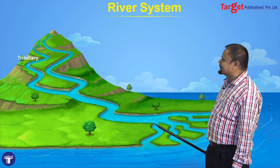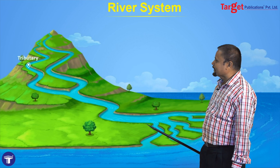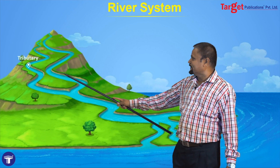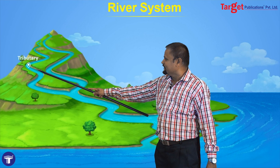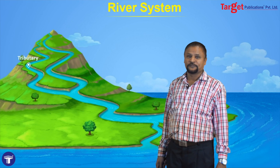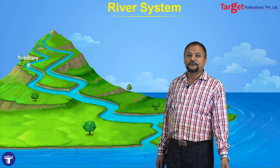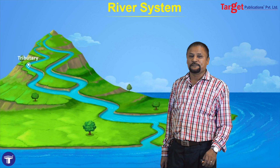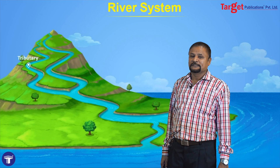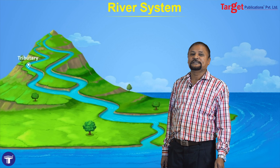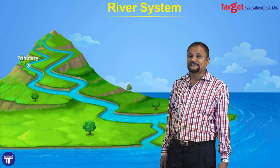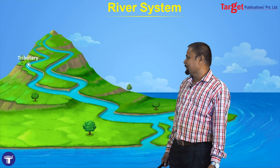The next one is the tributary. The branch river which is joining with the main river is called tributary. For example, Yamuna is the important tributary of Ganga. Sadledge is the important tributary of Indus river.